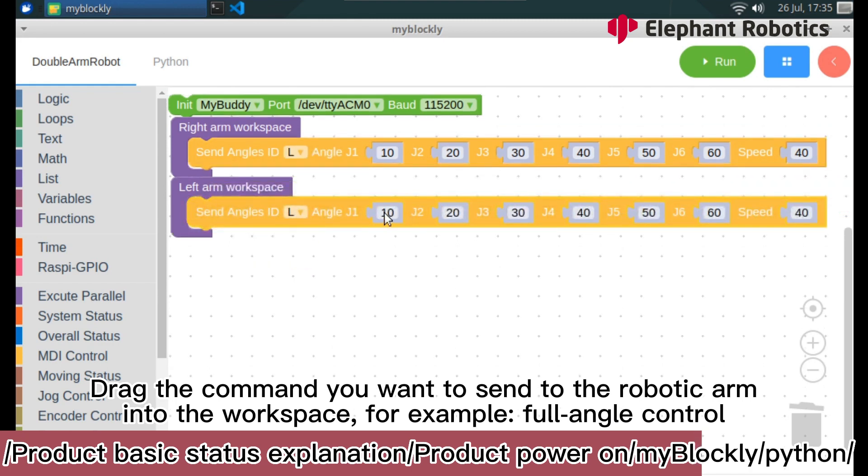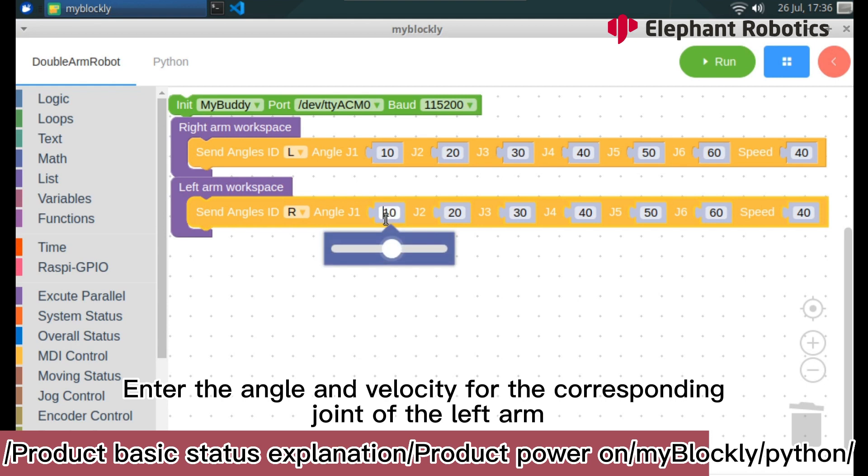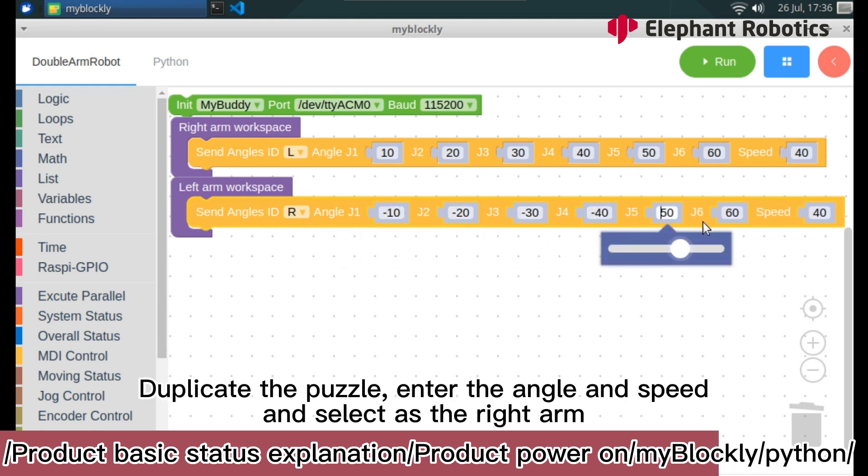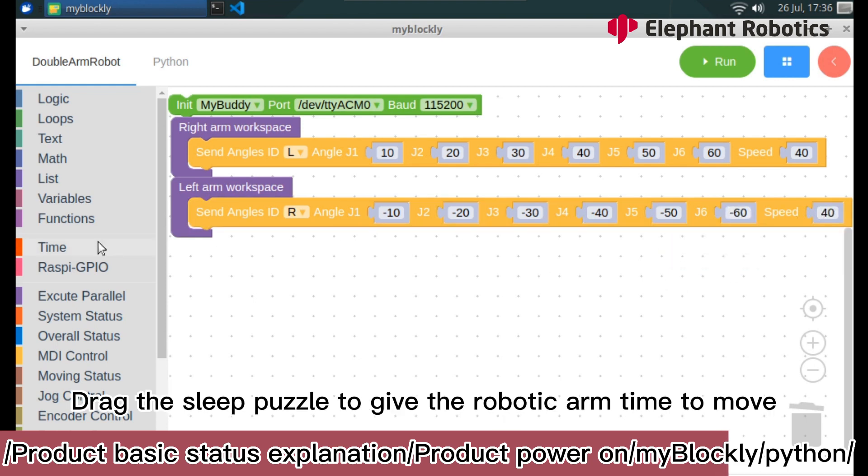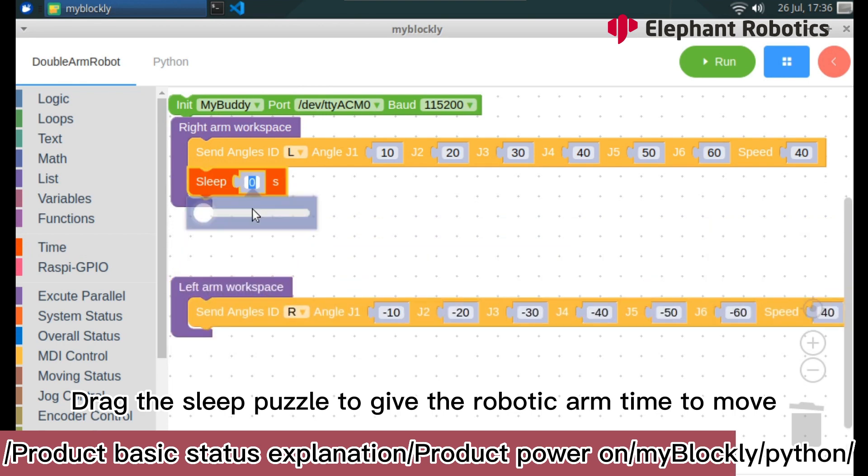For example, for angle control. Enter the angle and velocity for the corresponding joint of the left arm. Duplicate the puzzle. Enter the angle and speed and select as the right arm. Drag the sleep puzzle to give the robotic arm time to move.